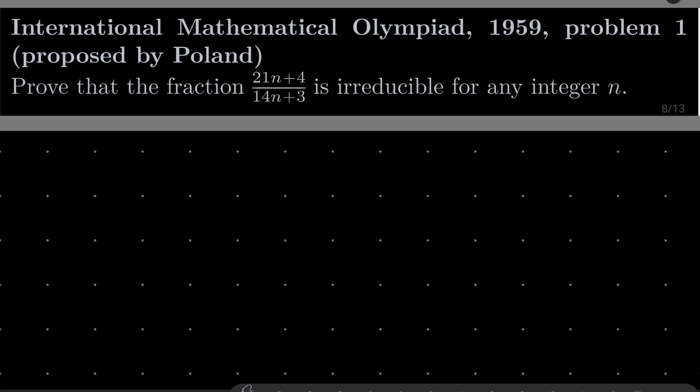And this problem is almost trivial, I'd say. Prove that the fraction 21n plus 4 over 14n plus 3 is irreducible for any integer n.